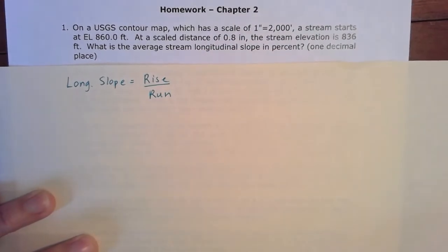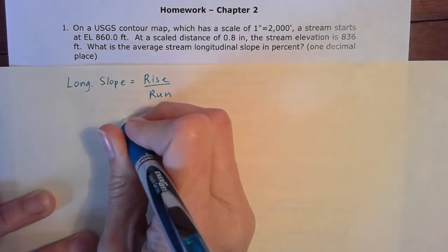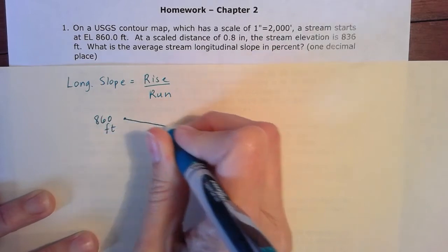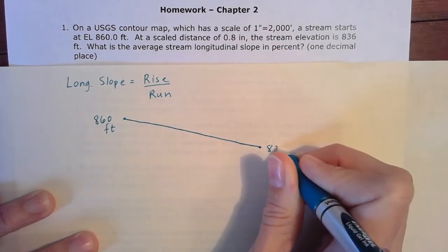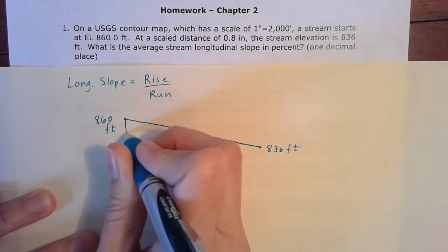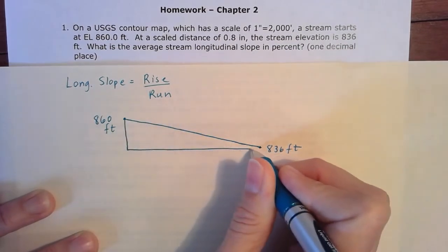So if we sketch that out, we're going to start at 860 feet and then make our way all the way down to 836 feet. So we can complete that triangle there and figure out our rise and our run.